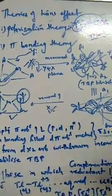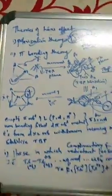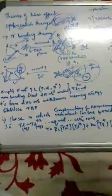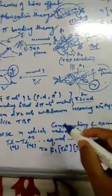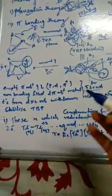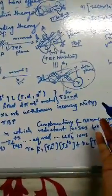So this is the second theory — the pi bonding theory — and the first was the polarization theory. This completes the theory of the trans effect: what is the trans effect, the mechanism of the trans effect, and preparation of cisplatin. Now we will go to the next two concepts: complementary and non-complementary reactions.